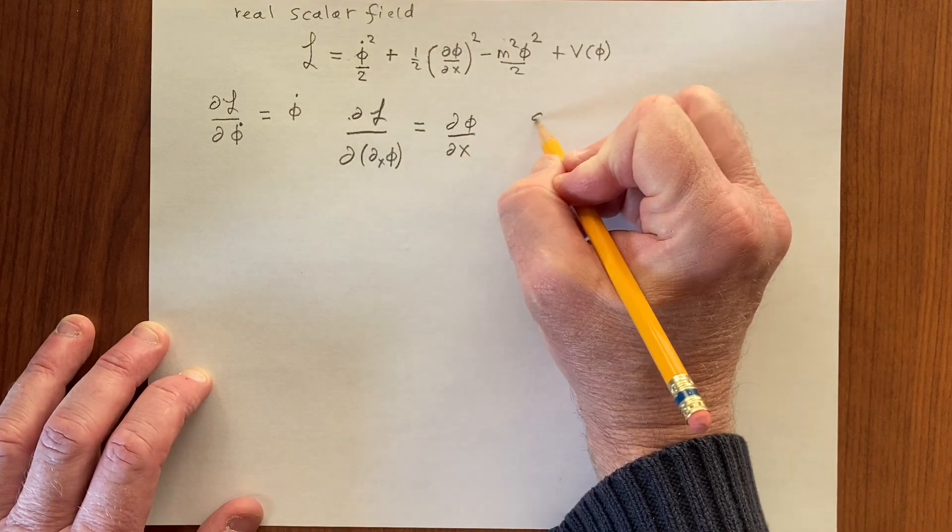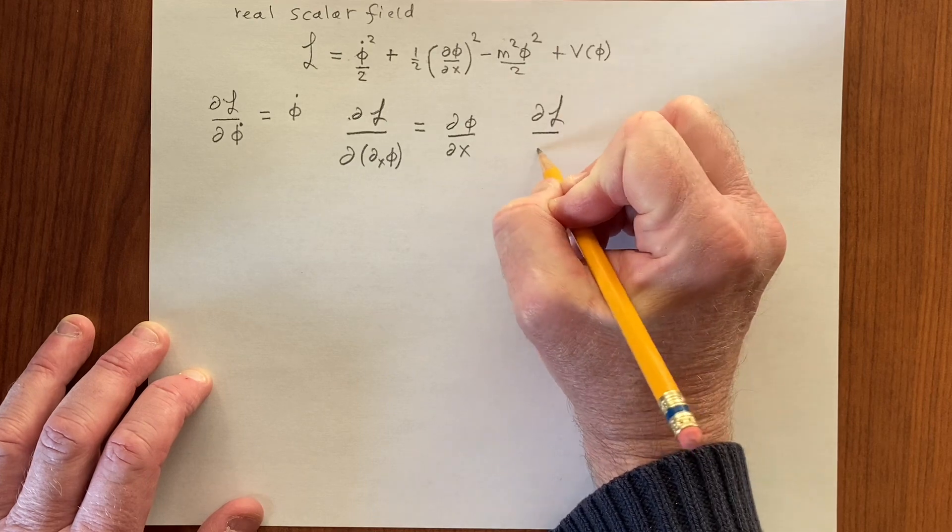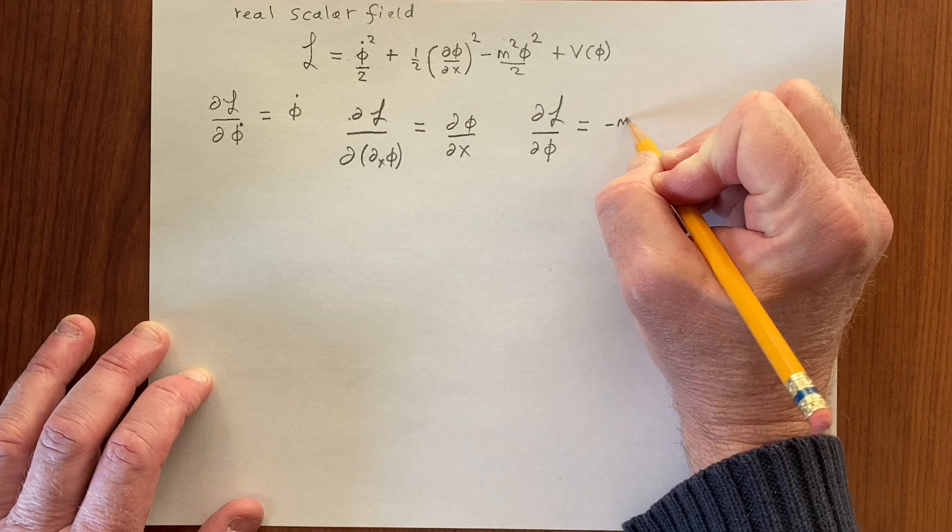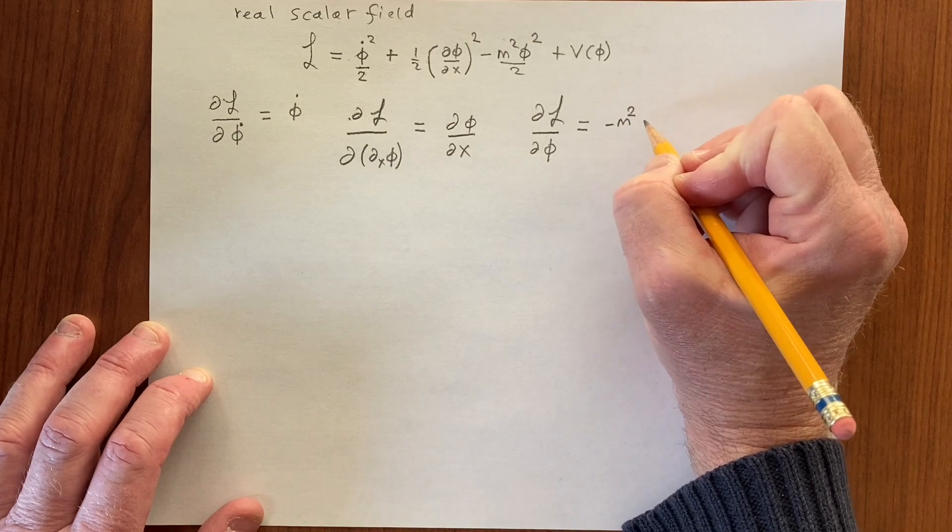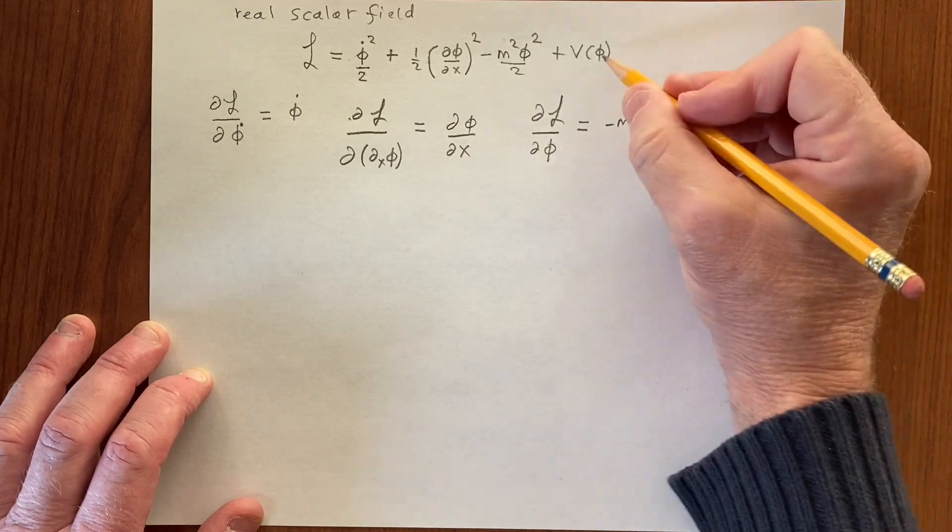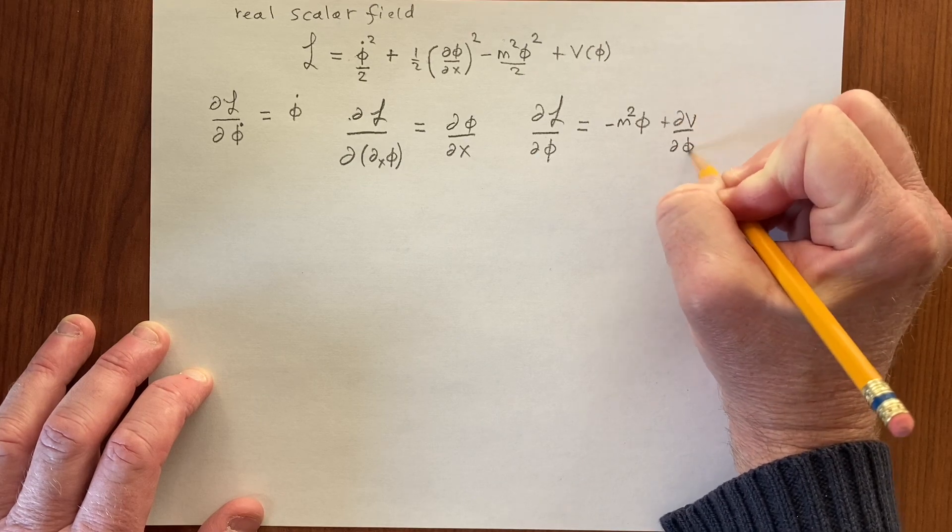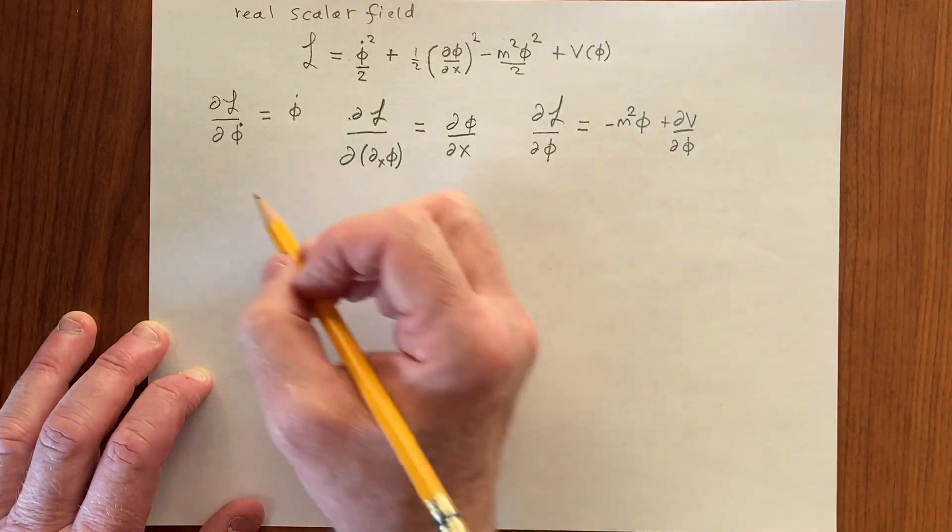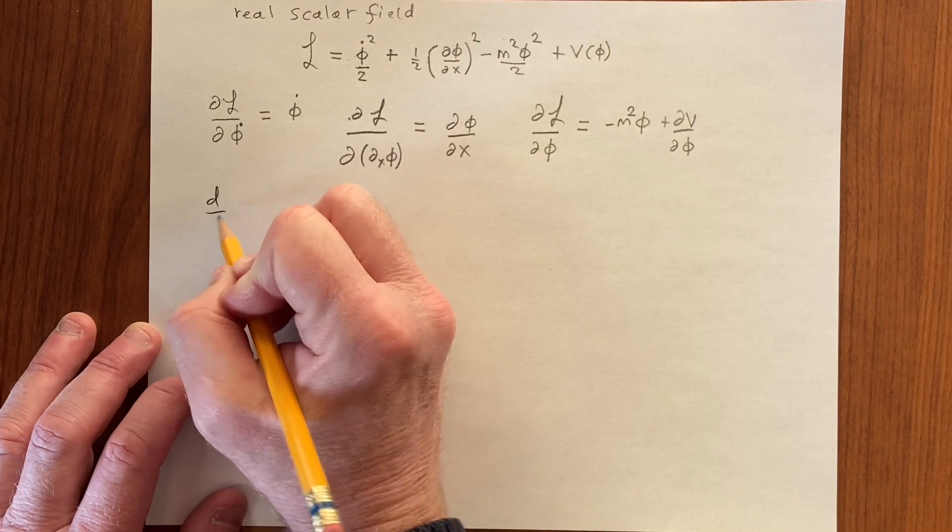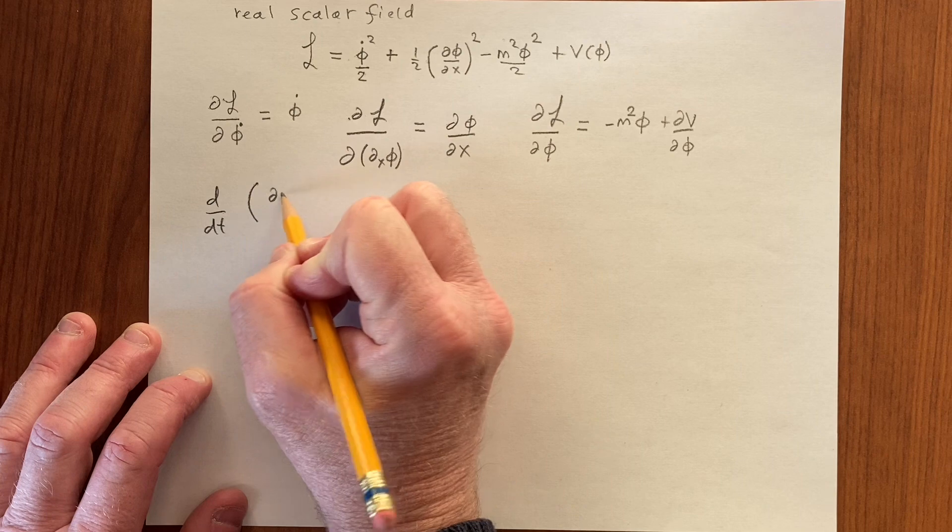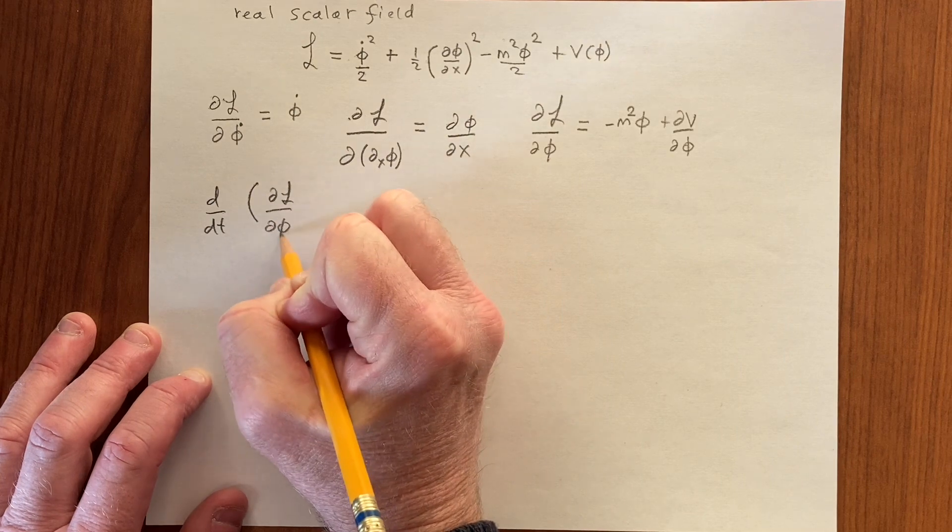dl by d phi minus m squared phi, and then we have to do d by dt of dl by d phi dot.